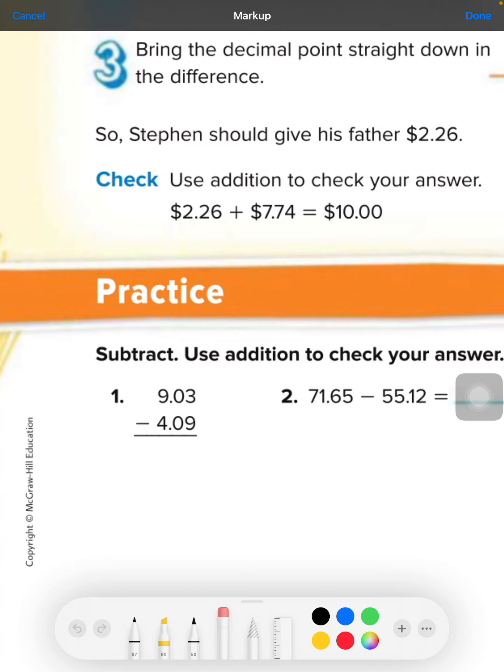Number one, 9.03 subtract 4.09. We cannot take 9 from 3, so then we have to get a pen that works. Cross that off, cross that off and borrow from here. That's going to be an 8. This would make it a 10, but then we have to borrow from it, so this is going to actually be a 9. This will be 13.